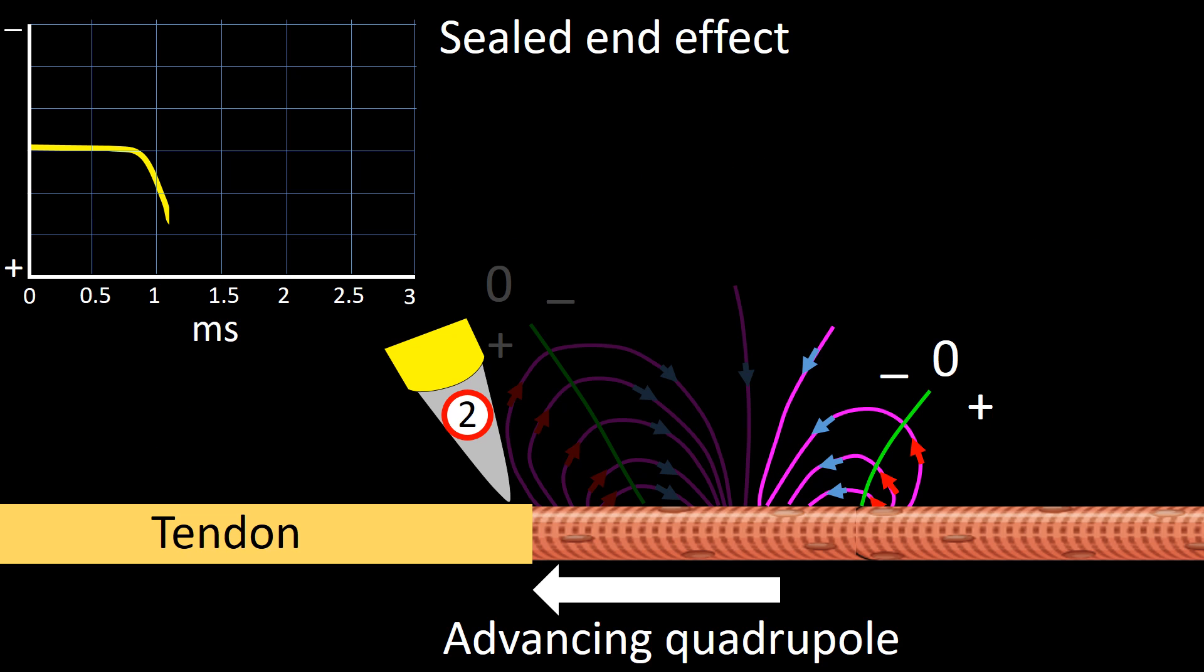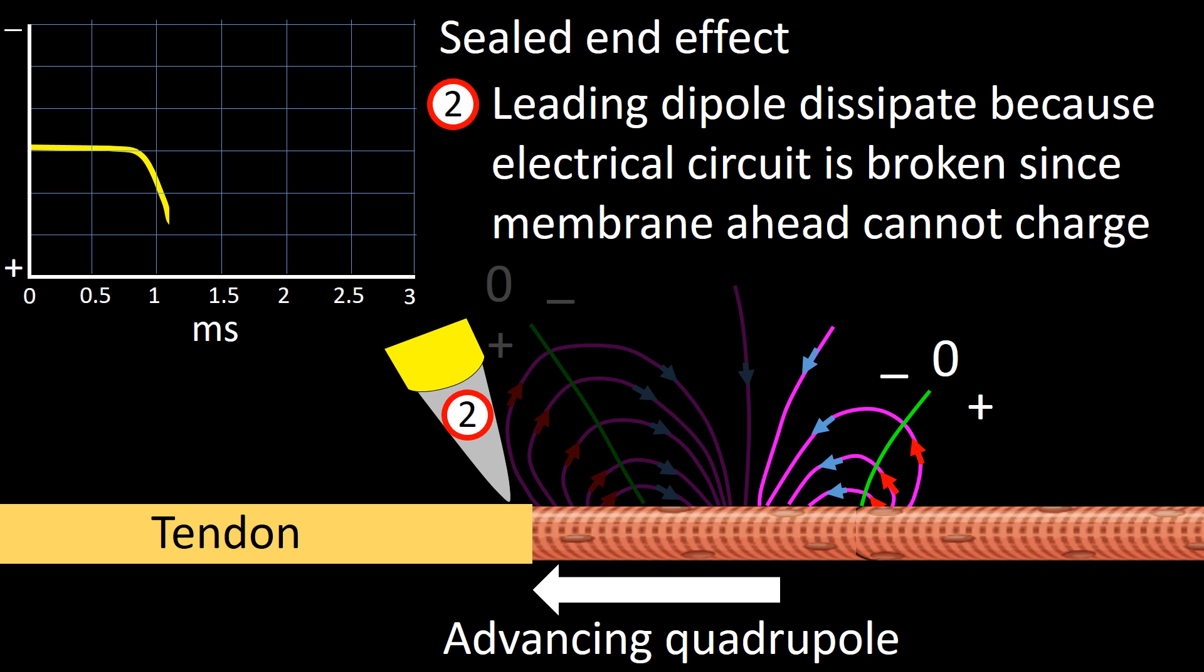Stage 2 is characterized by the leading dipole dissipating. This is so because the electrical circuit is broken since the tendon cannot be charged. At the display panel, the tracing goes up because the leading dipole fails to produce ionic current. Thus, the tracing returns to baseline.